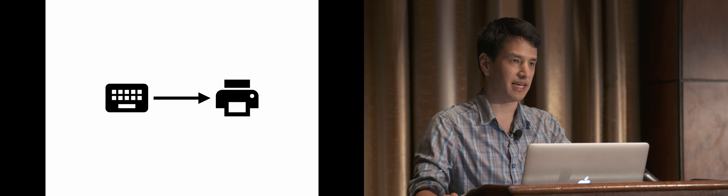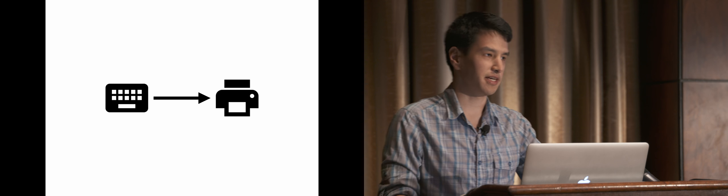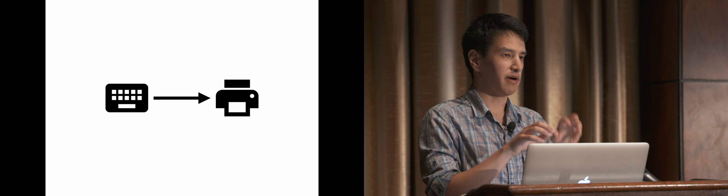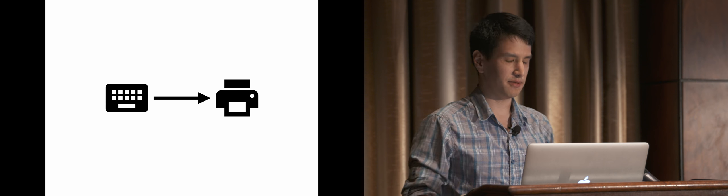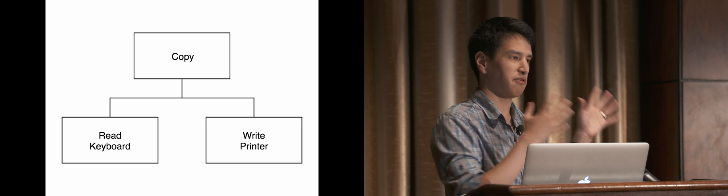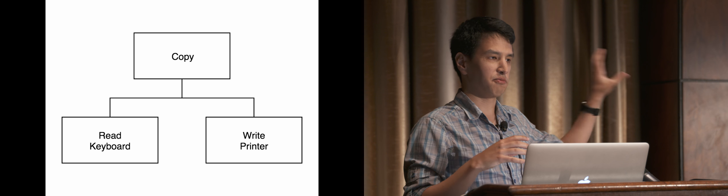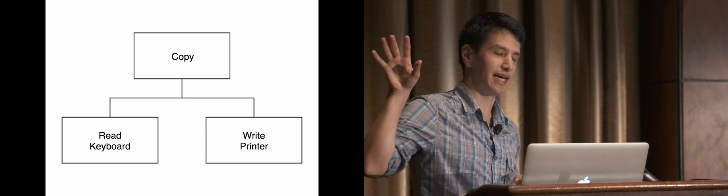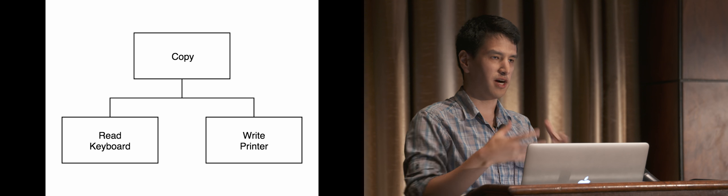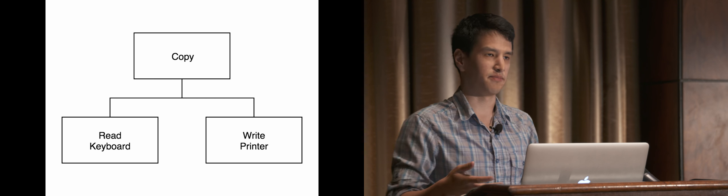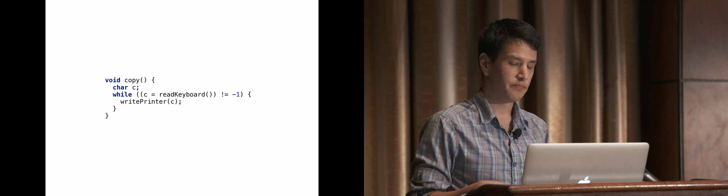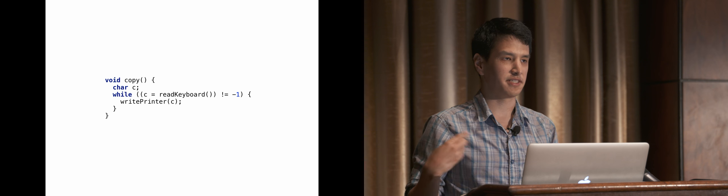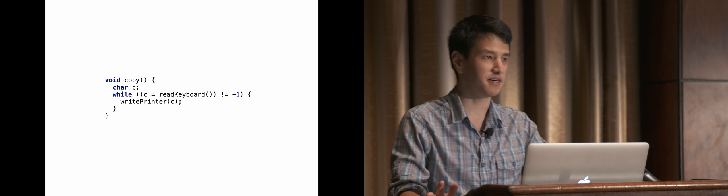Let's go through an example from Uncle Bob's papers. Say we have an application where you type into a keyboard and whatever you type gets printed to a printer. A simple version might have three modules: one for reading from the keyboard, one for writing to the printer, and a copy module that combines them. Very simple code - a while loop that keeps reading from the keyboard until end of file, and while reading, keeps writing to the printer.